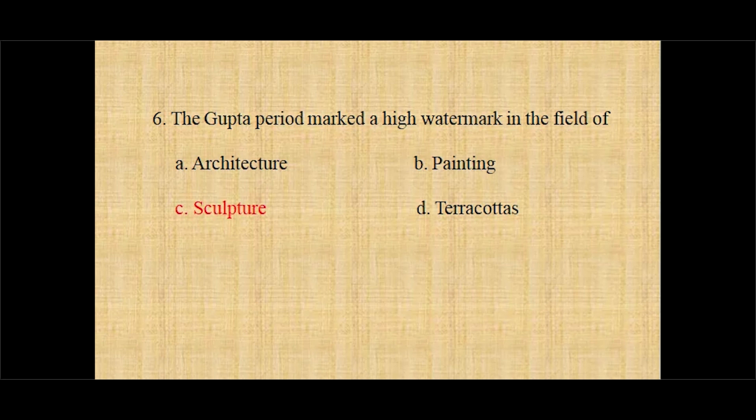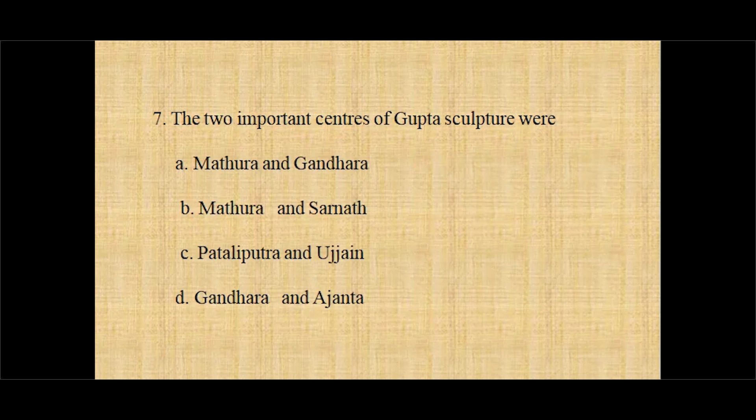The correct answer to question six is option C, sculpture. Question number seven: The two important centers of Gupta sculpture were — option A Mathura and Gandhara, option B Mathura and Sarnath, option C Pataliputra and Ujjain, option D Gandhara and Ajanta. And the correct answer is option B, Mathura and Sarnath.